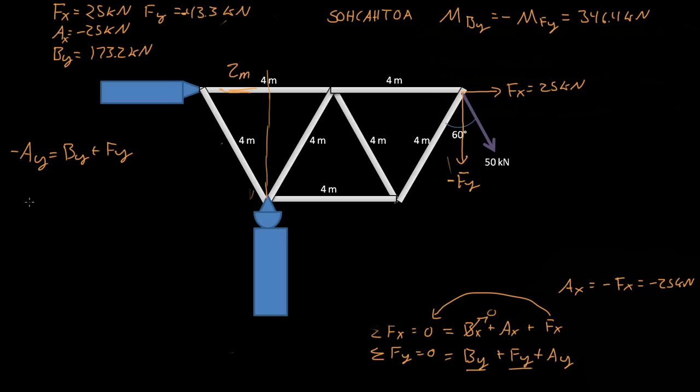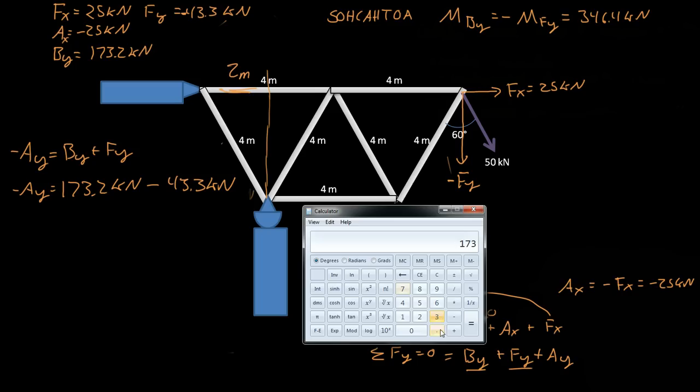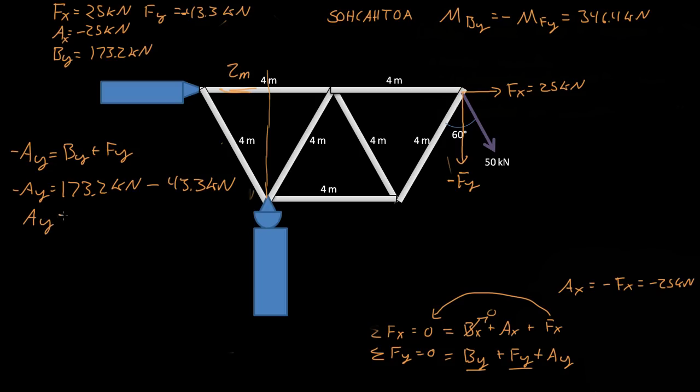So negative Ay is equal to 173.2 kilonewtons minus 43.3 kilonewtons. So 173.2 minus 43.3 equals 129.9 kilonewtons. So Ay is equal to 129.9 kilonewtons. So we found out what Ay was, so we found all the forces, all the moments, and we're good.